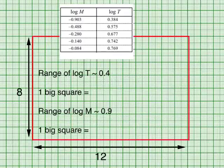For the range of values shown, I will allocate 8 big squares for the range of log t, so that 1 big square will take 0.05. For the range of log m, I can comfortably give it 9 big squares so that each big square will take 0.1.